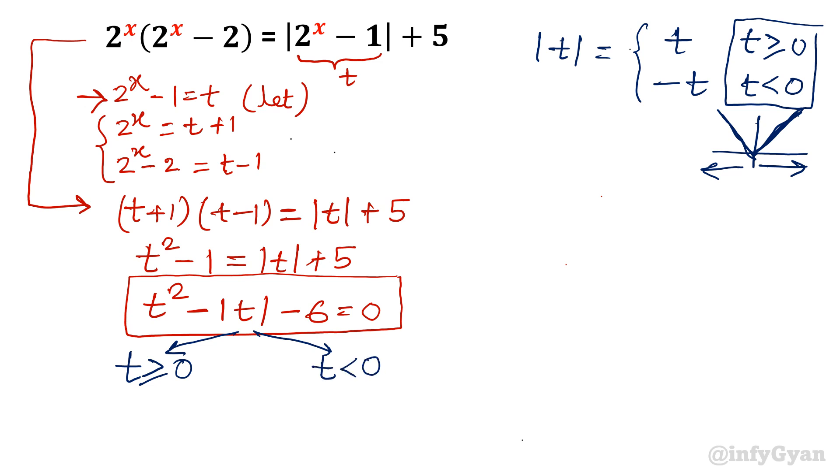When it is t positive then quadratic will be t square, t positive. Then mod t will be t. So minus t minus 6 is equal to 0. And when t negative, then function would be minus t. So t square plus t minus 6 is equal to 0. Now we have to solve both the quadratic equations. We will get the answer. Let us find out.